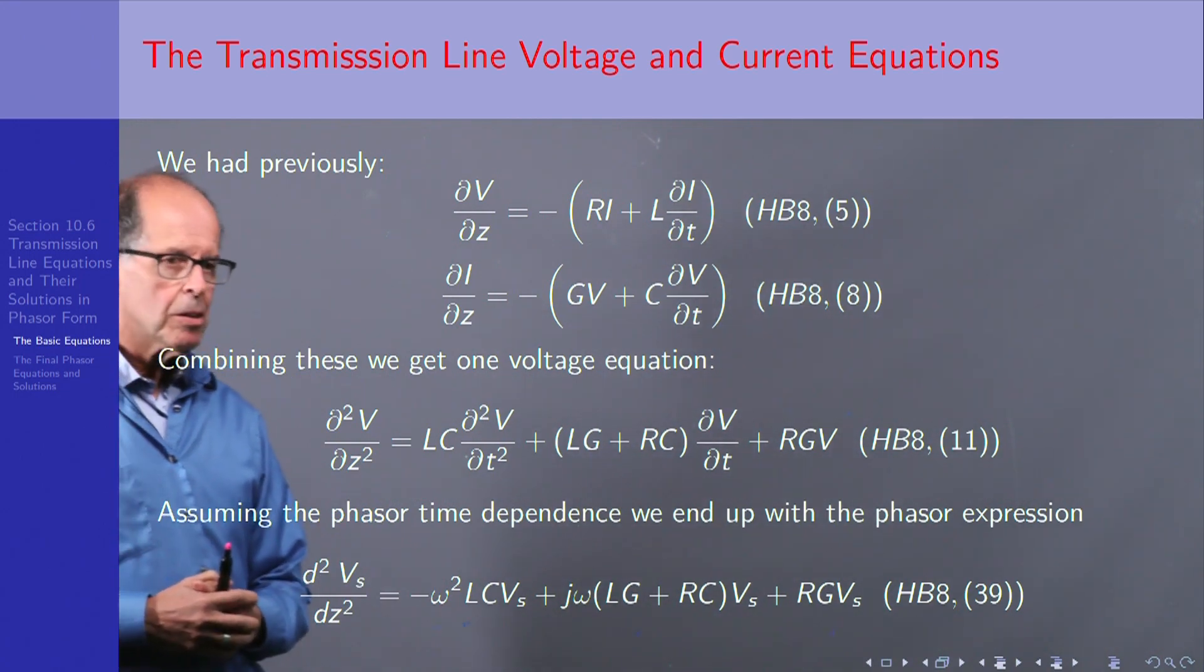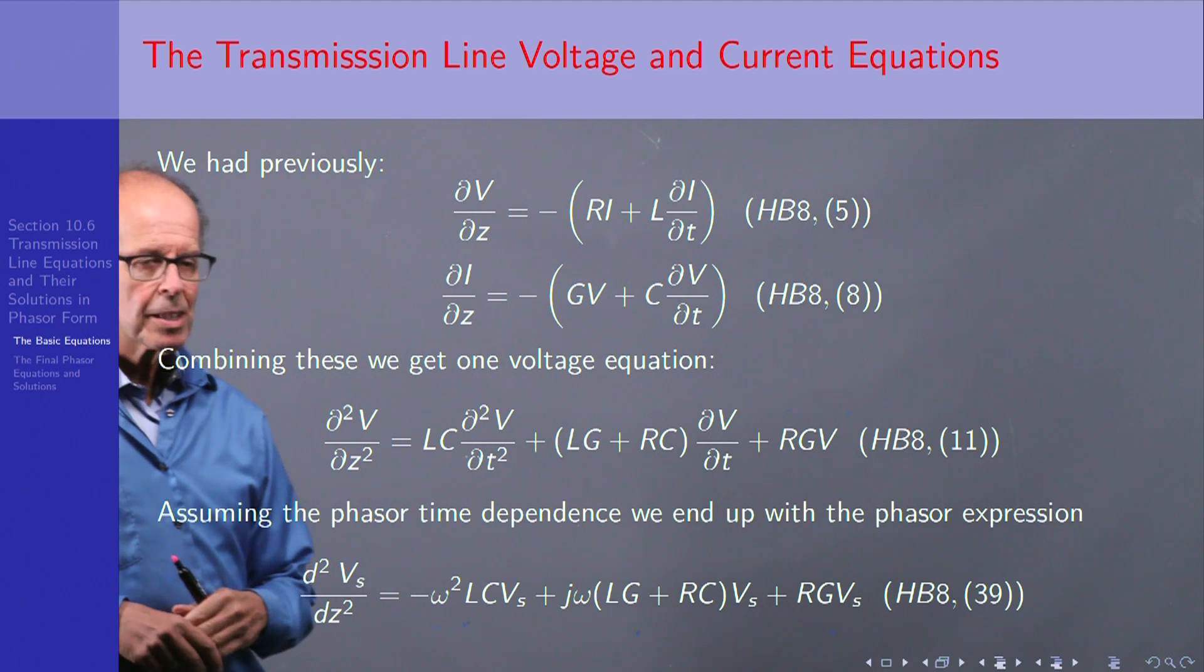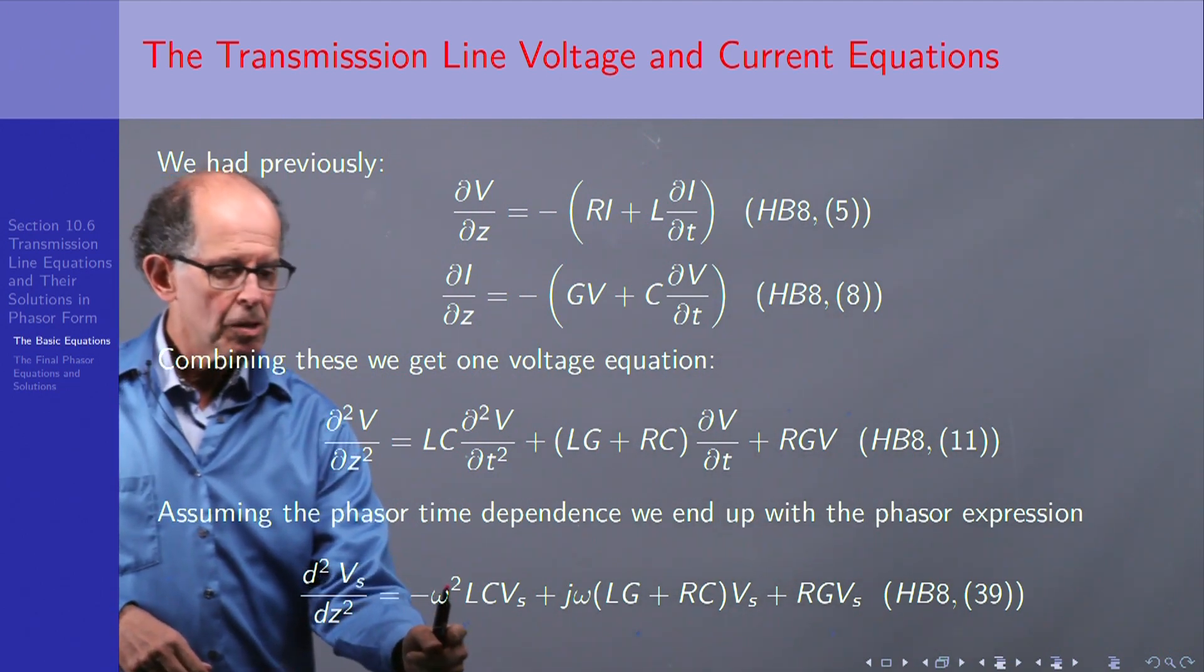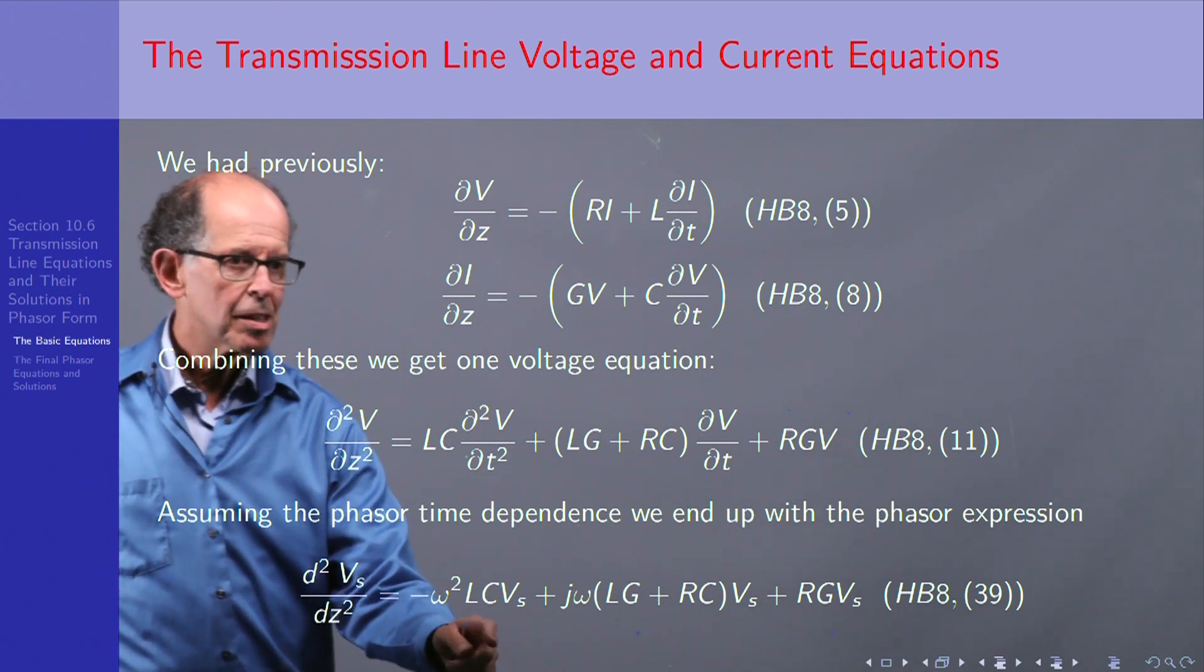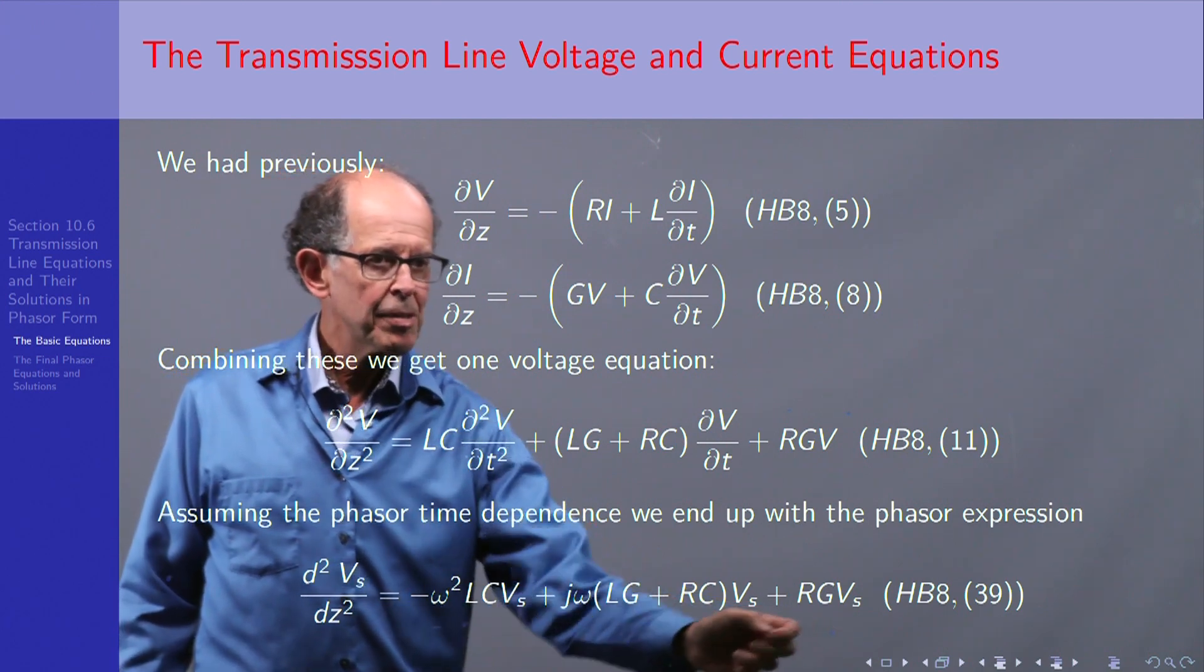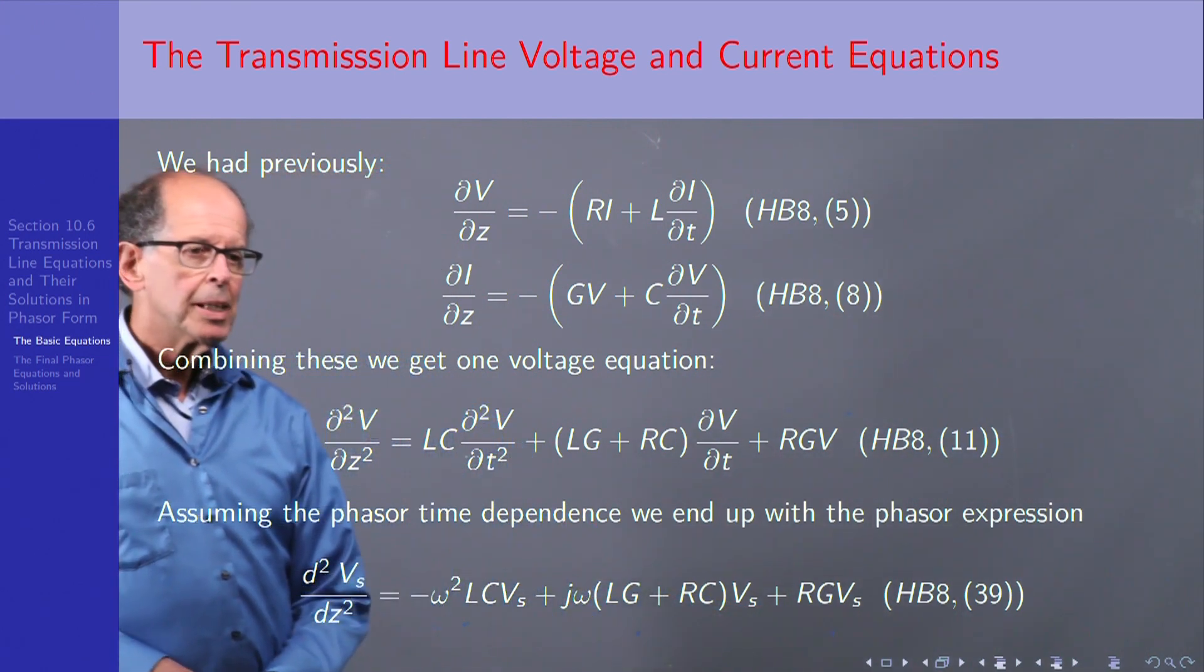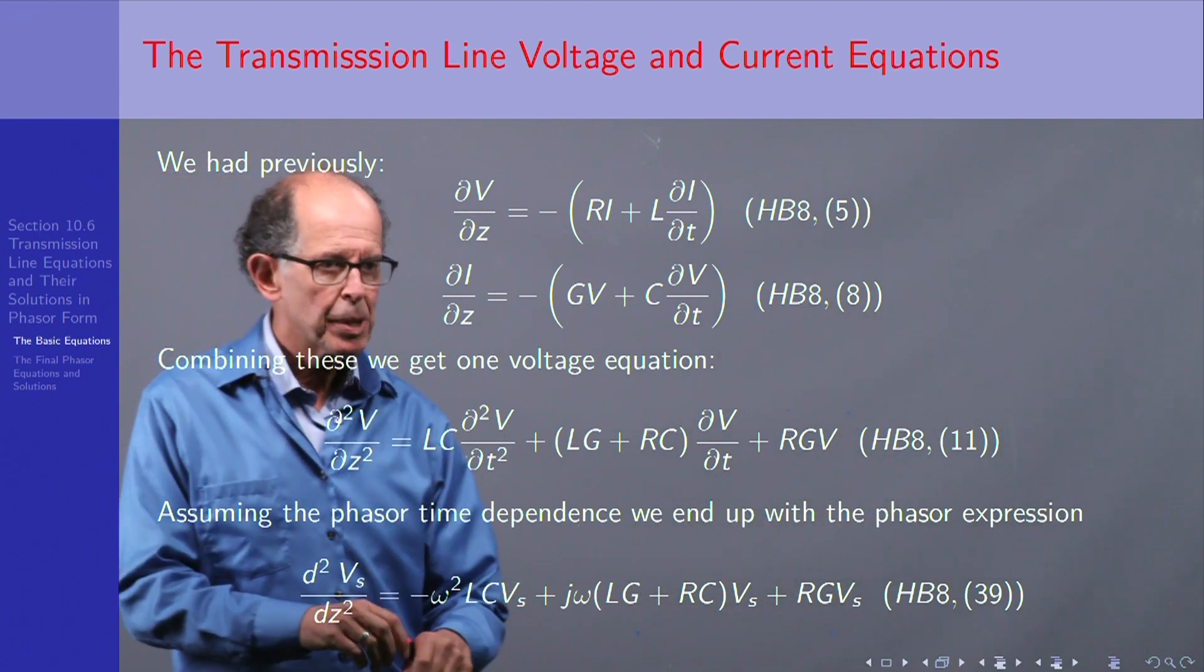Now, if we look at the application of phasors to all this, every derivative gets replaced by the appropriate power. So right here, we see ω squared, and it's multiplying LC times Vs, and the first time derivative replaced by jω. And what I want to point out is that you can actually factor this expression out.